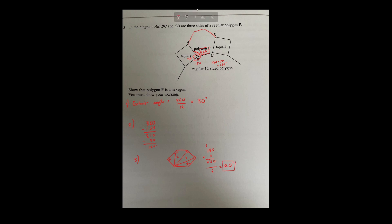Therefore polygon - therefore polygon P is a hexagon.